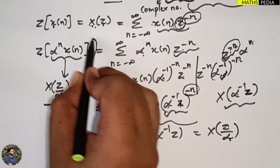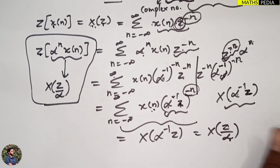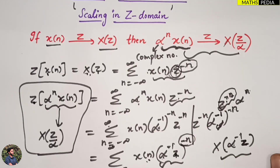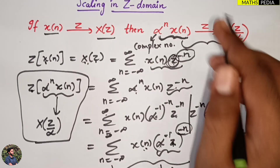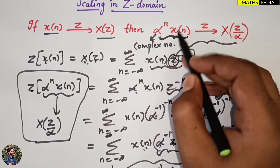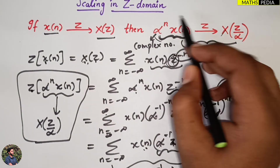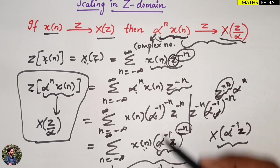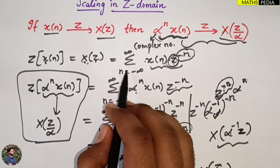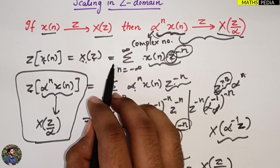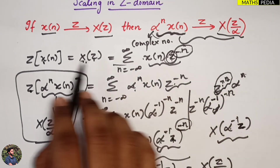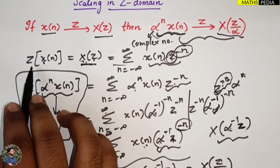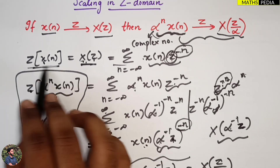This is what we had to prove. We have proven that the Z-transform of alpha^n times x(n) is X(z/alpha), by using the standard formula for X(z) and simple algebraic manipulation.